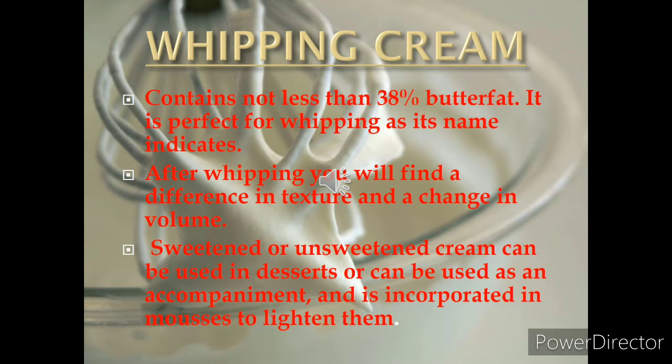Whipping cream contains around 38 percent butter fat. It is perfect for whipping, as the name itself indicates. After whipping you will notice that the volume will change and it will become more smooth and shiny. If you want to make any frosting using whipping cream then you must add less sugar, because if you add more sugar you may lose the texture of the whipped cream.